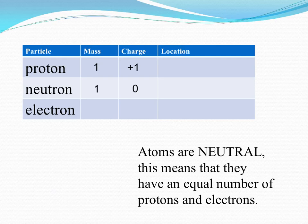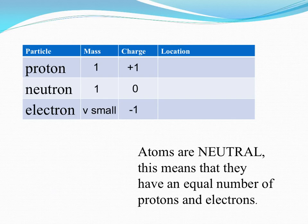The electron has a negligible mass, which means it is very small compared to the other two, and it has a charge of minus one. Don't forget to put the minus in front of the charge on the electron. Of course the location of electrons is in shells or energy levels around the nucleus.